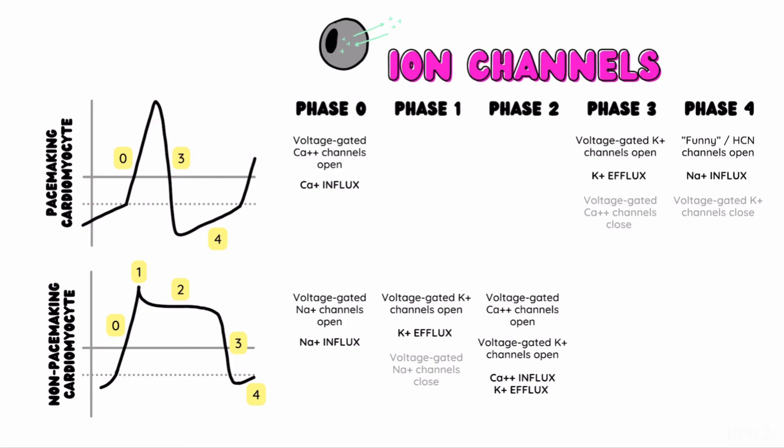The calcium channels finally close and the voltage-gated potassium channels remain open during phase 3 to allow potassium efflux and overall hyperpolarization of the cardiomyocyte. Finally, during phase 4, the potassium rectifier cells maintain the resting potential until the pacemaker cells trigger the cardiomyocytes to begin the cycle again.